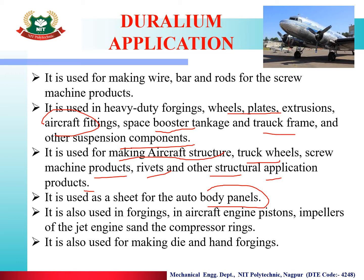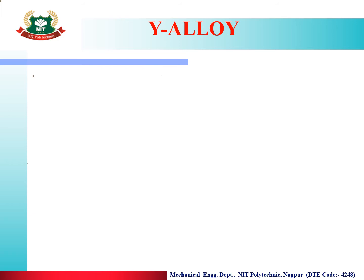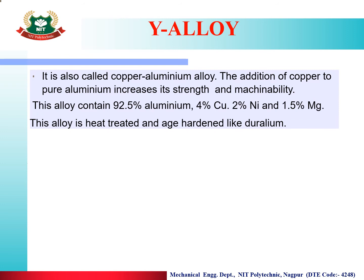Now let's look at the second aluminium alloy: Y-Alloy. Its typical composition is: 92.5% Aluminium, 4% Copper, 2% Nickel, and 1.5% Magnesium. This Y-Alloy can also be called a copper-aluminium alloy. Adding copper increases its strength and machinability.